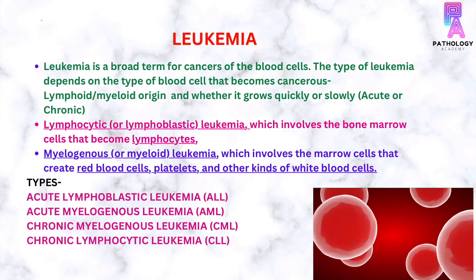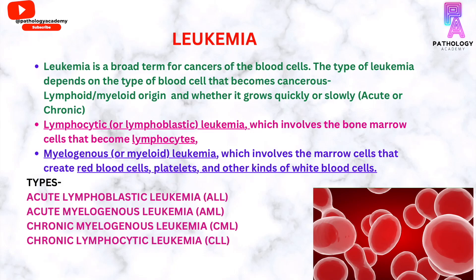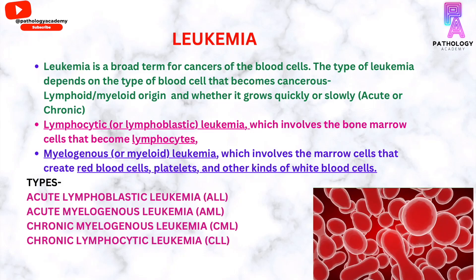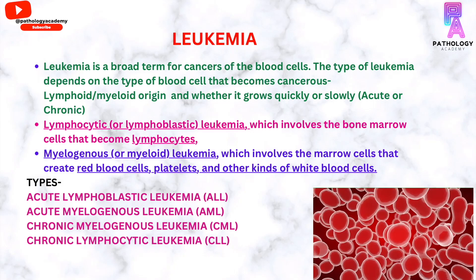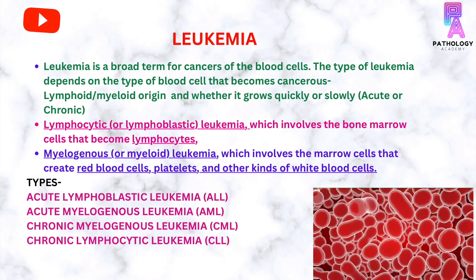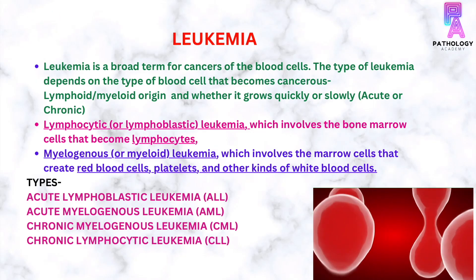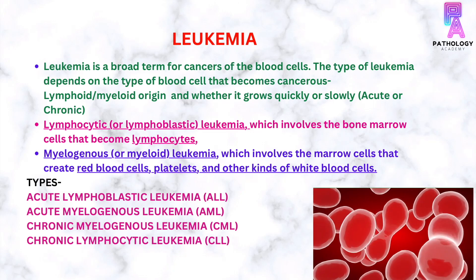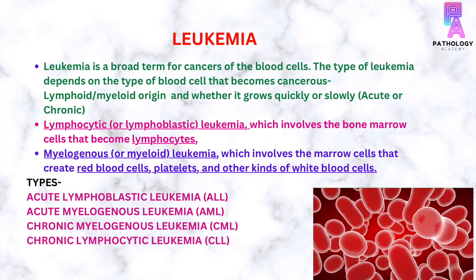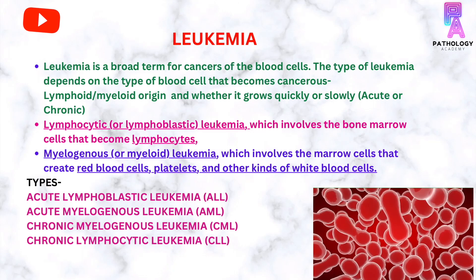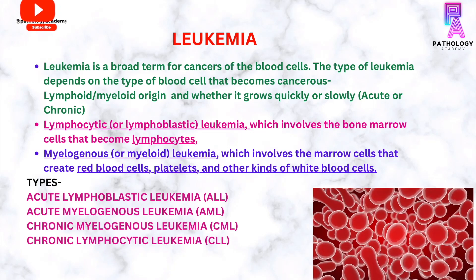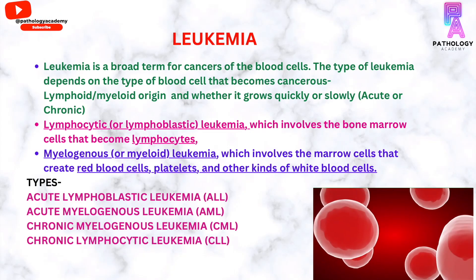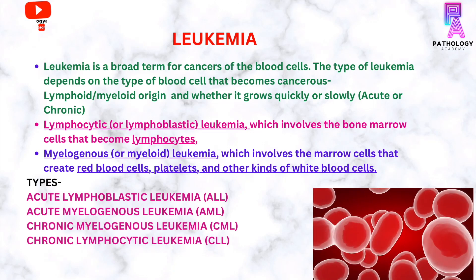Leukemia is a broad term for cancer of the blood cells. The type of leukemia depends on the type of blood cell that becomes cancerous — it could be of lymphoid or myeloid origin — and depending upon the growth, quick or slow, it is also classified as acute or chronic.